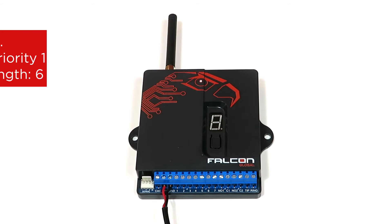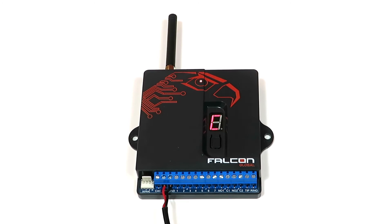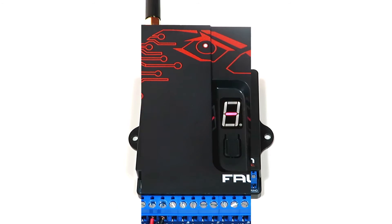Once connected to the GSM network it will display the priority of the network it is connected to, as well as the signal strength of that connection. In this demo it shows that we're connected to priority network 1 at a signal strength of 6. This is a signal strength out of 9, with 1 being poor and 9 being excellent. For great app connectivity we recommend a minimum signal strength of 5.